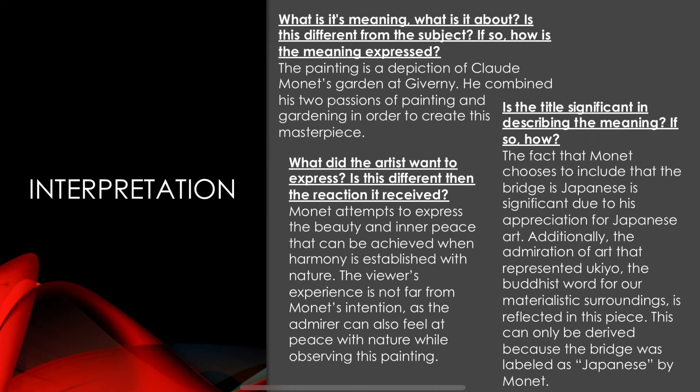As for the interpretation, the painting is a depiction of Claude Monet's garden at Giverny. He combined his two passions of painting and gardening in order to create this masterpiece. He wanted to express the beauty and inner peace that can be achieved when harmony is established between nature and humans. The viewer's experience is not far from Monet's intention, as the admirer can also feel at peace with nature while observing this painting.